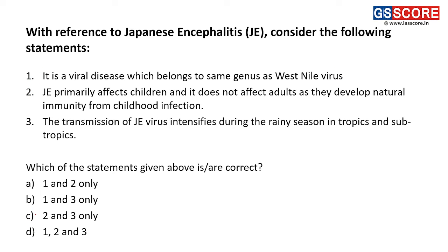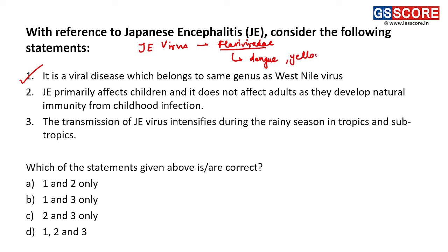Next question: with reference to Japanese encephalitis, consider the following statements. First, it is a viral disease which belongs to the same genus as West Nile virus. This statement is correct because Japanese encephalitis virus belongs to a family called Flaviviridae, which also includes diseases like Dengue, yellow fever, and West Nile virus.